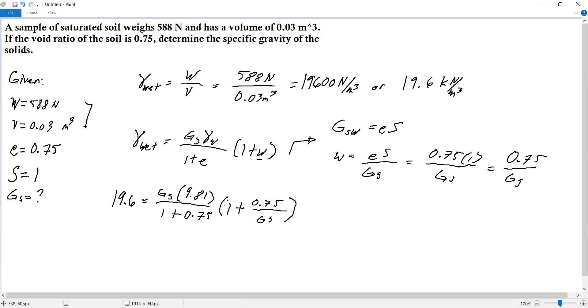Now we simplify. We can multiply both sides by 1.75. So 19.6 times 1.75, then divide by 9.81. This gives us 3.4964 equals Gs times quantity 1 plus 0.75 over Gs.